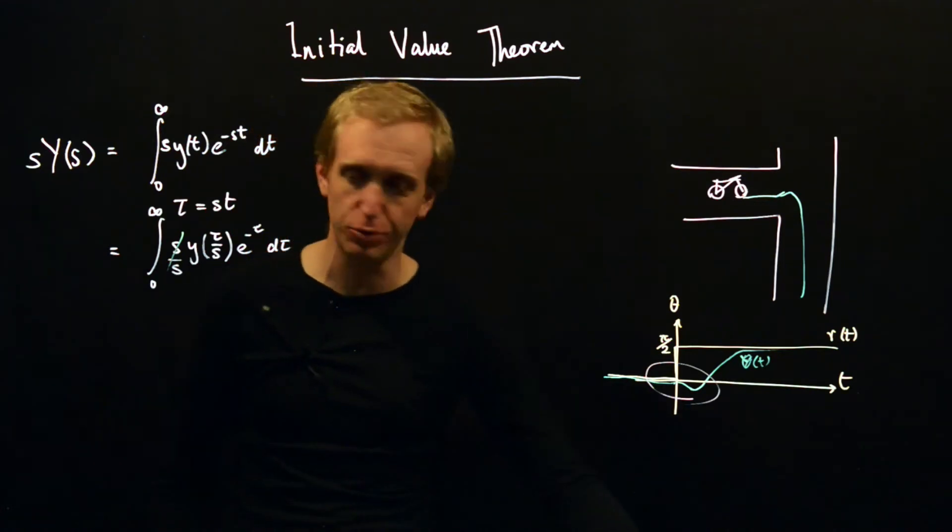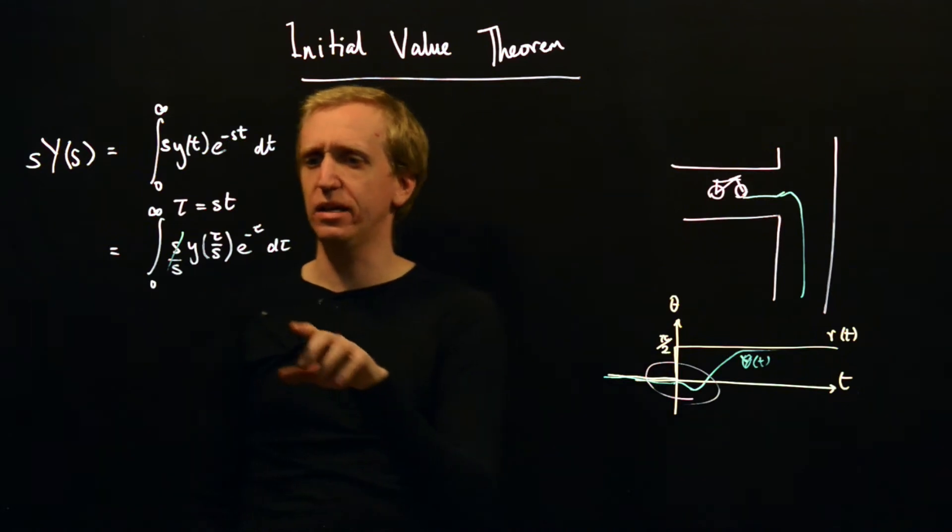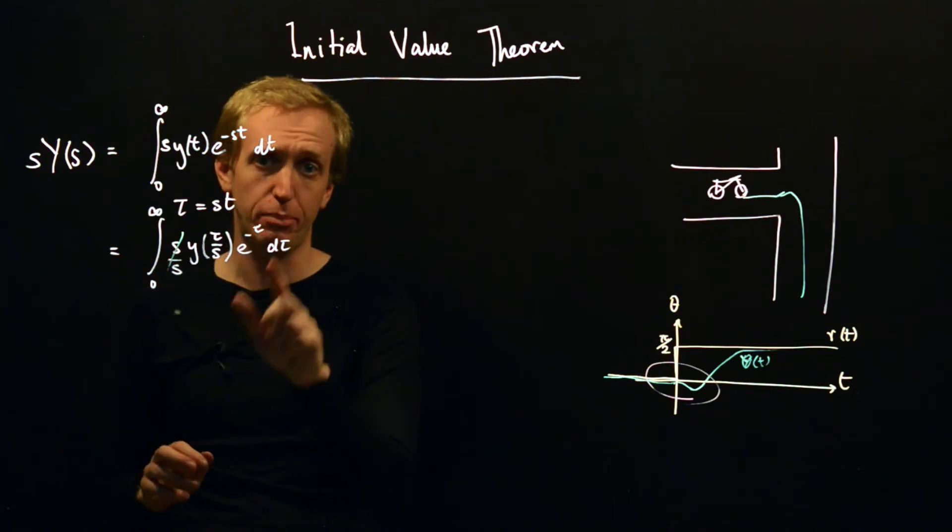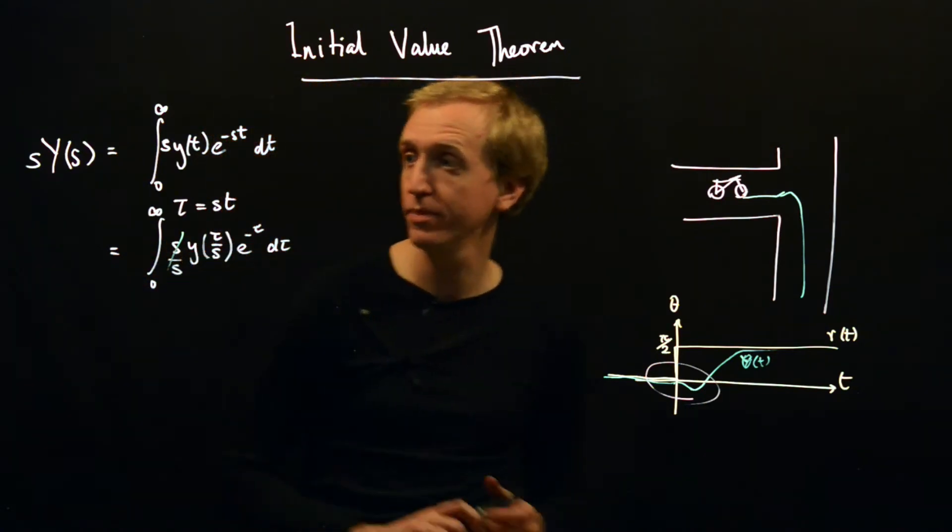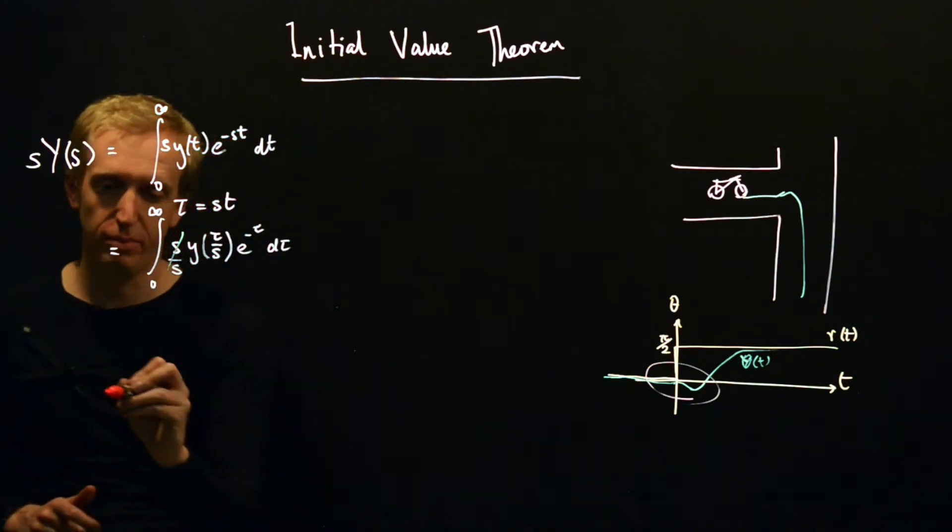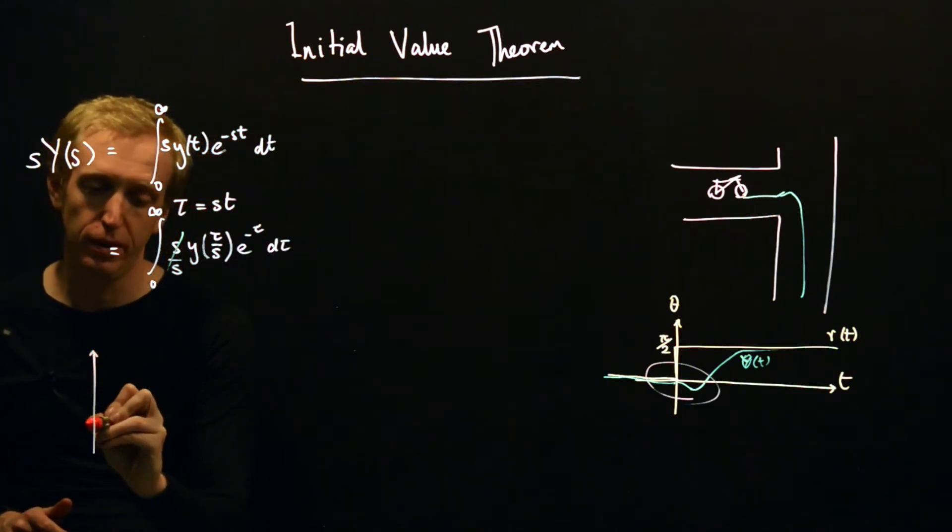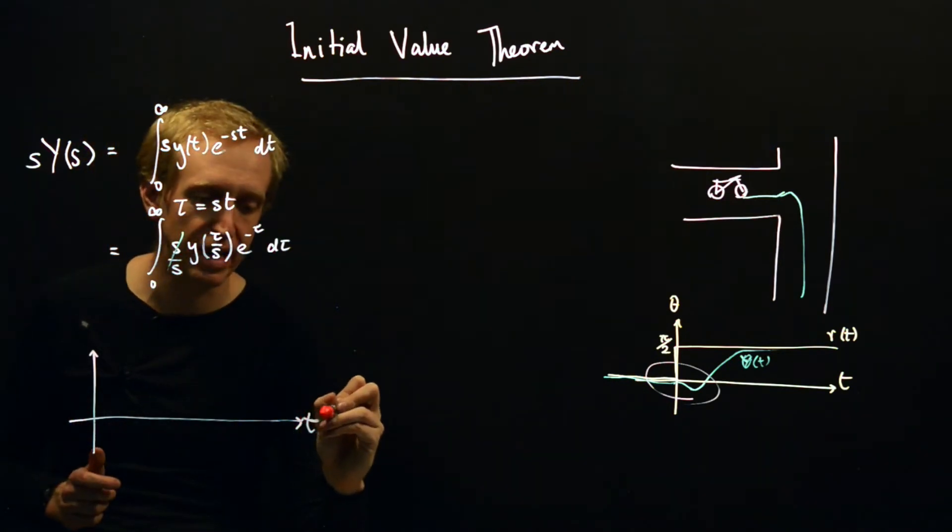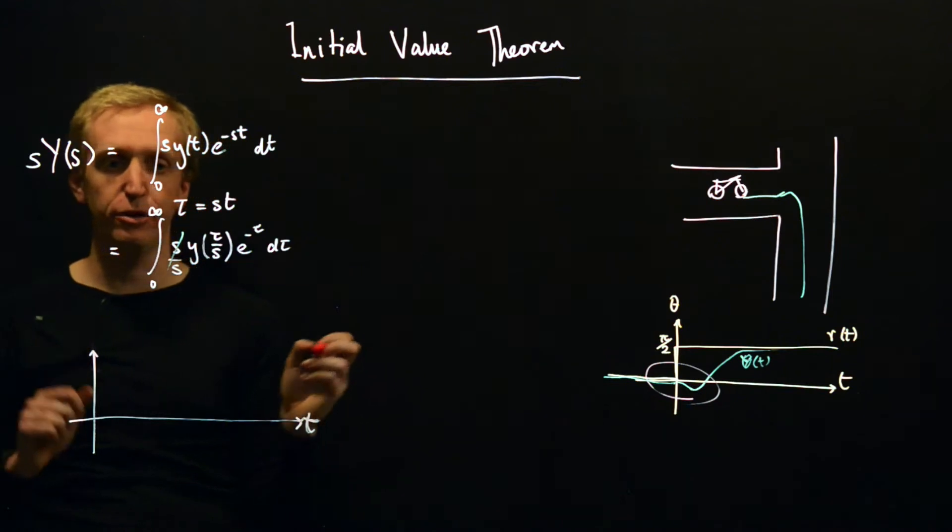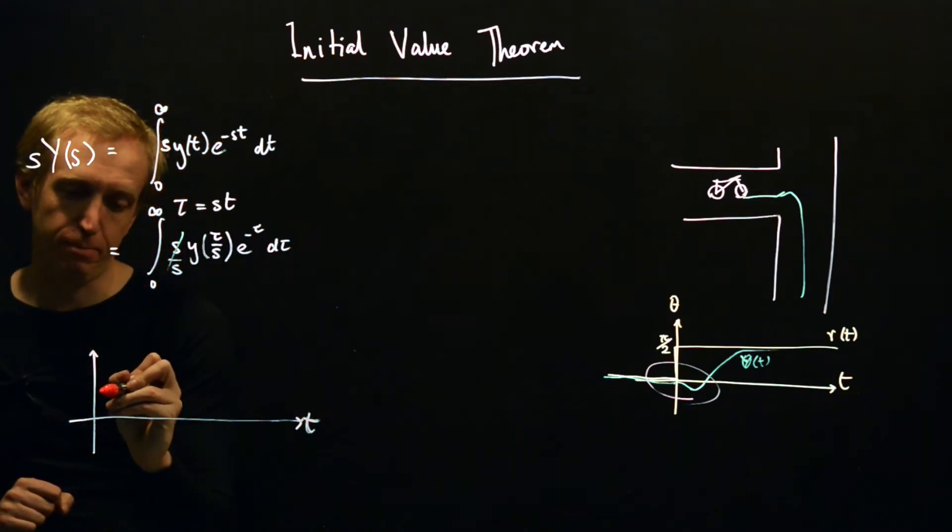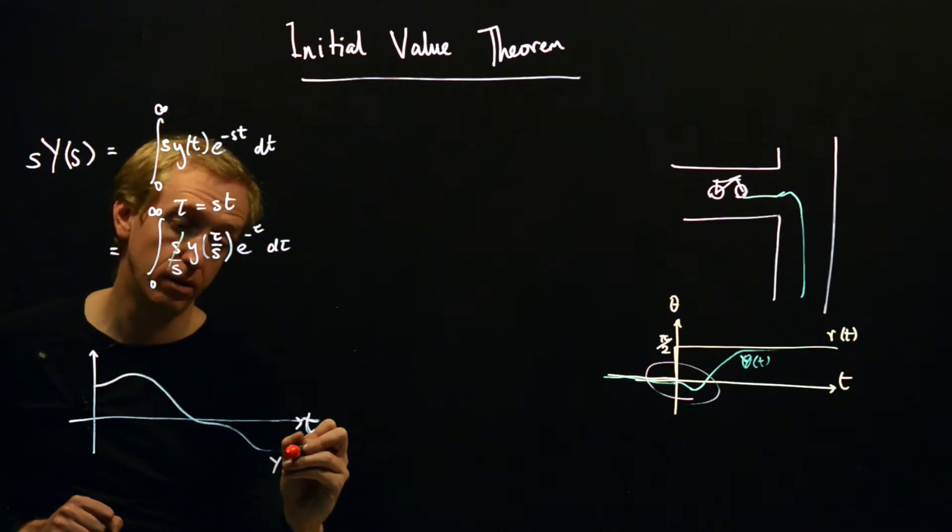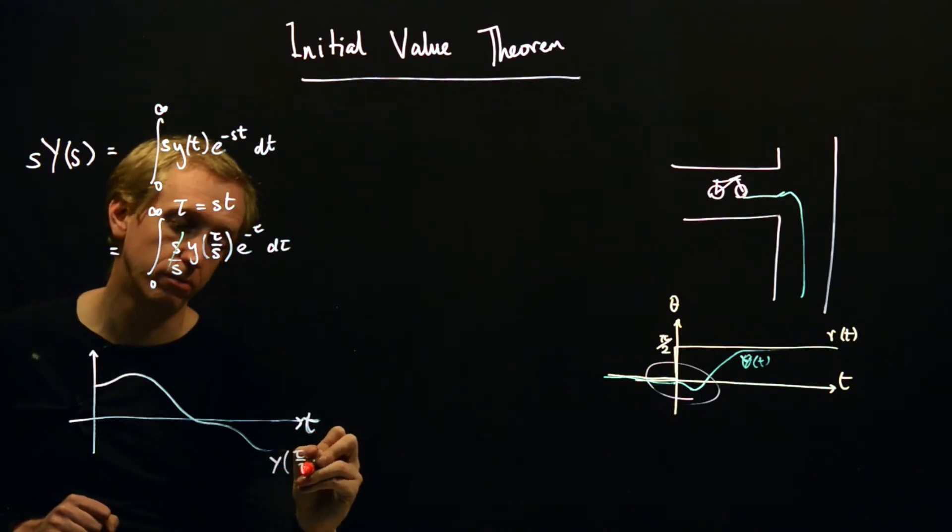We haven't really done anything so far. We've just sort of done a bit of algebra. But now what I want you to think about is what happens when we make s very, very large. In particular, what's going to happen to this integral here? So let's just draw a little picture of what's sort of going on. Here we've got time. Let's call it τ actually because in our new variable.